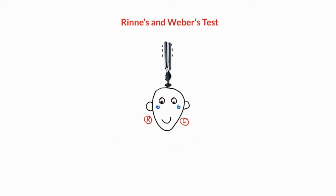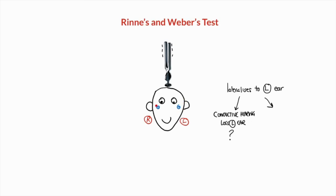In a sensorineural hearing loss, the patient will lateralize the sound during Weber's test towards the normal ear. For example, if a patient with unilateral hearing loss has a normal-looking ear canal on examination and lateralizes to the left ear, we cannot yet tell whether they have a conductive hearing loss on the left or a sensorineural hearing loss on the right. This is where Rinne's test helps further determine whether the problem is on the left or the right side.